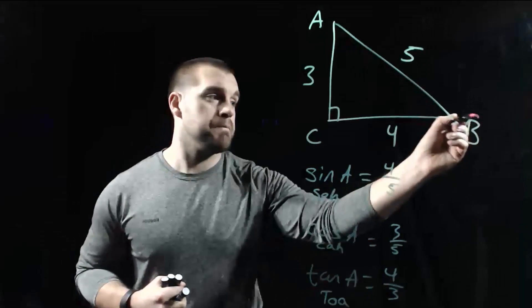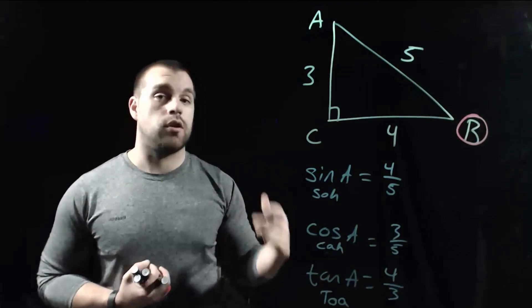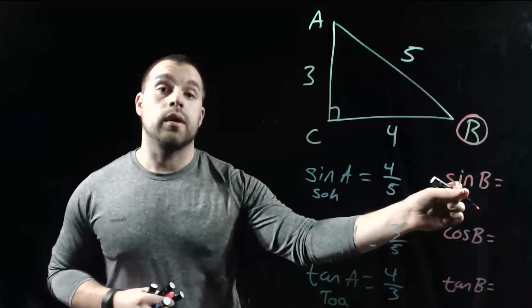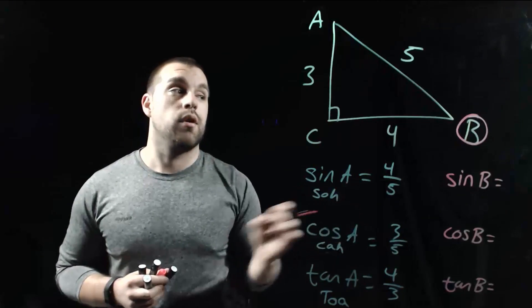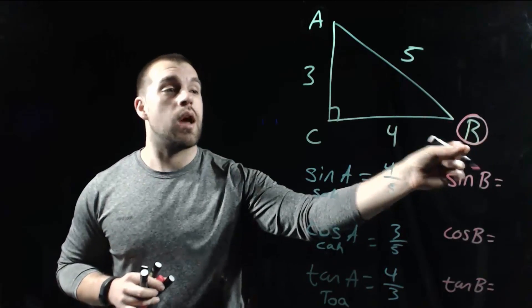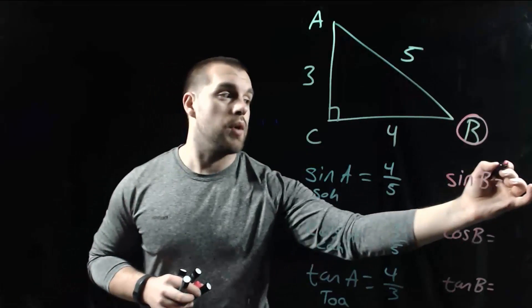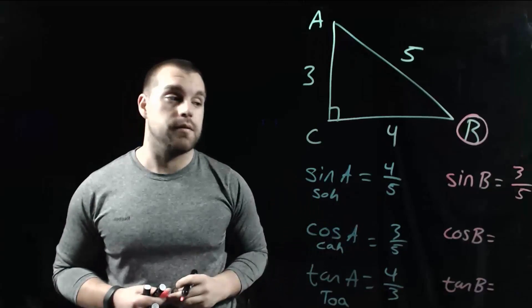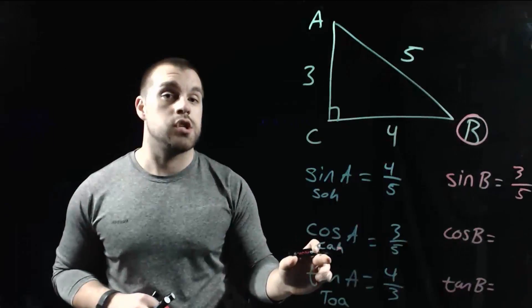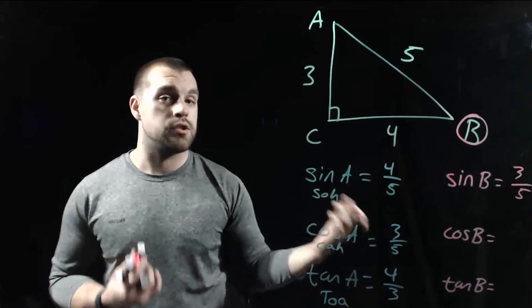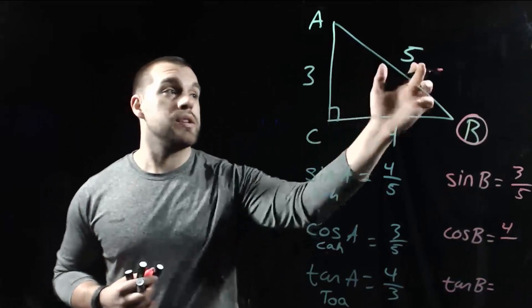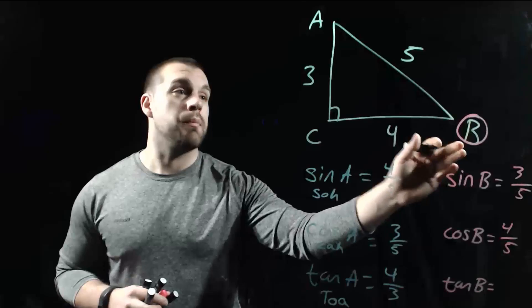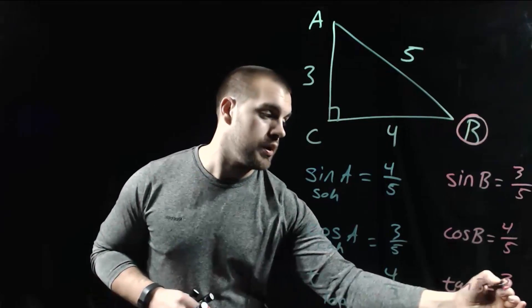Now let's shift our focus to angle B and do our three trig ratios again. For the sine of angle B, opposite over hypotenuse — now the opposite side is 3 because it's all the way across from B, and the hypotenuse is still 5. So sine of B is 3 fifths. For cosine of B, adjacent over hypotenuse — the adjacent side is now 4, and the hypotenuse is still 5. For the tangent of B, opposite over adjacent — 3 is opposite and 4 is adjacent, so tangent of B is 3 fourths.